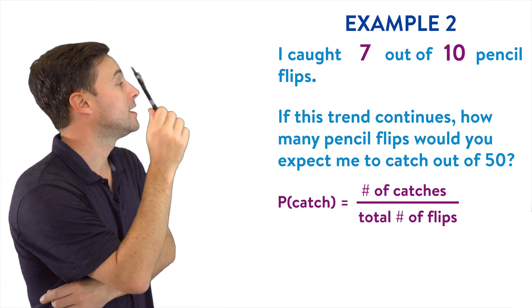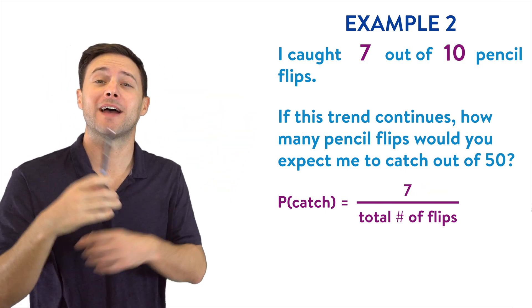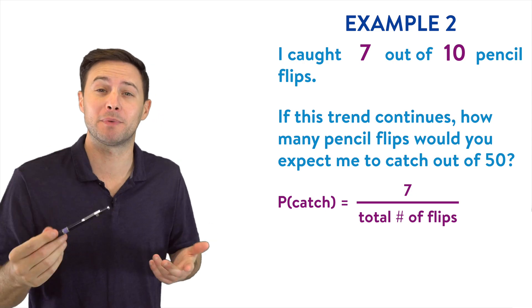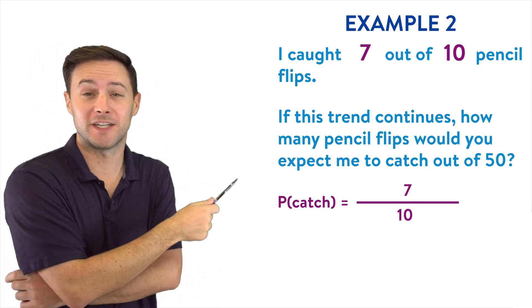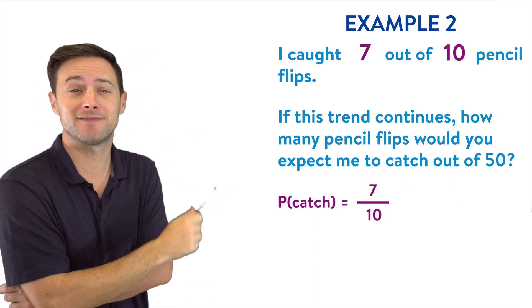That's equal to how many times did I catch it? Seven out of how many times did we do the experiment? How many times did I actually flip it total? I did it 10 times. So experimental probability of catching a pencil flip is seven out of 10.